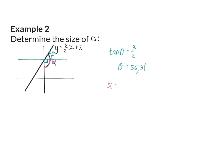So to determine the full angle alpha, it will be 90 degrees plus the 56.31. So alpha is 146.31 degrees.